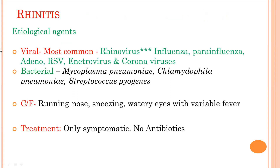Rhinitis is mostly viral. Rhinovirus is the most common cause. Other viruses include influenza, para-influenza, adenovirus, respiratory syncytial virus, enterovirus, and coronavirus. Bacteria include Mycoplasma pneumoniae, Chlamydophila pneumoniae, and Streptococcus pyogenes. Symptoms include running nose, sneezing, and watery eyes with variable fever. Treatment is only symptomatic; no antibiotics are required. Thank you very much.